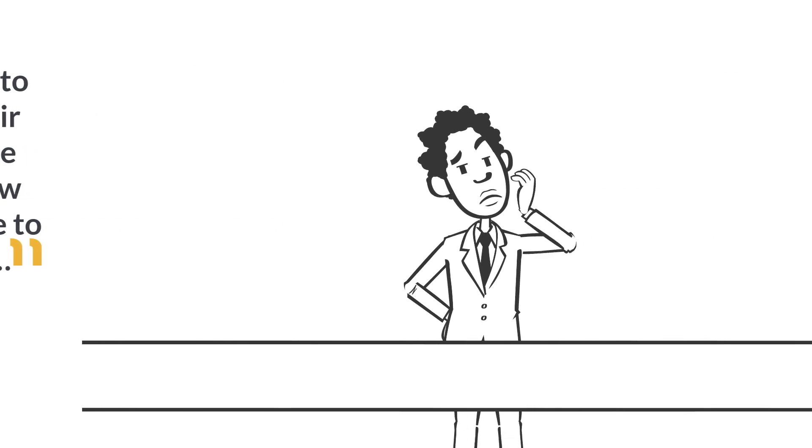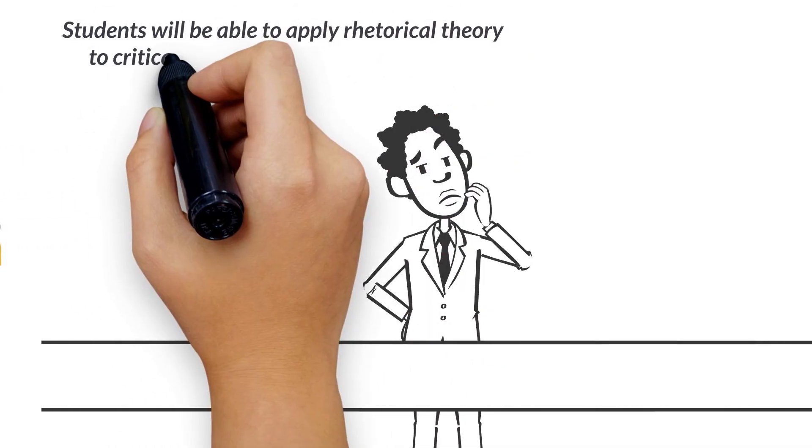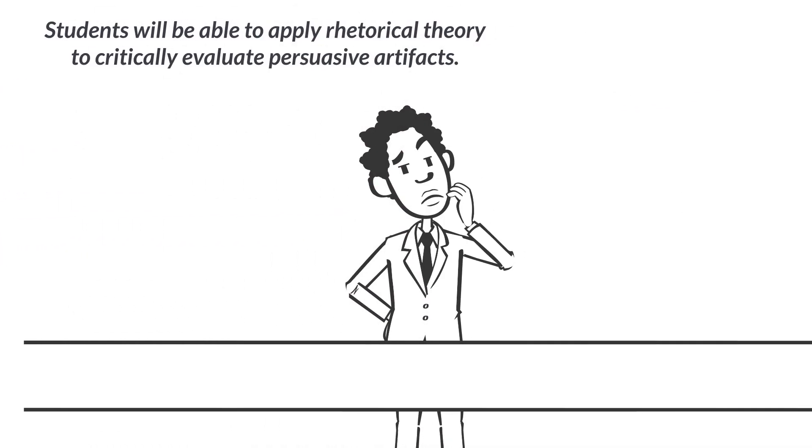Let's continue with our example. Remember the first goal of the course in persuasion: Students will be able to apply rhetorical theory to critically evaluate persuasive artifacts.